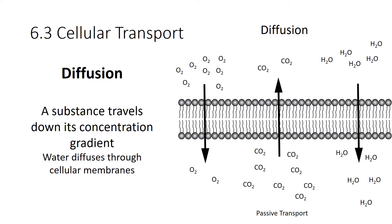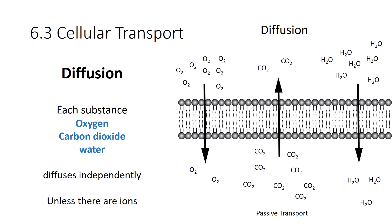Now, simple diffusion is an example of passive transport. Remember, the cell is not expending any energy here. It's just using the kinetic energy that's already in the system. When it comes to diffusion, each substance, whether it's oxygen, or carbon dioxide, or water, they're going to each diffuse independently of each other. And most things will diffuse independently of each other unless there are ions present. And I'm going to come back to that point in a few minutes.